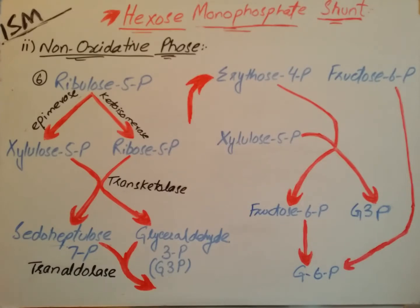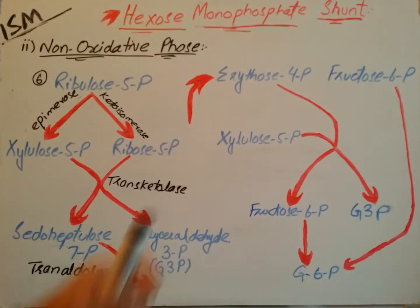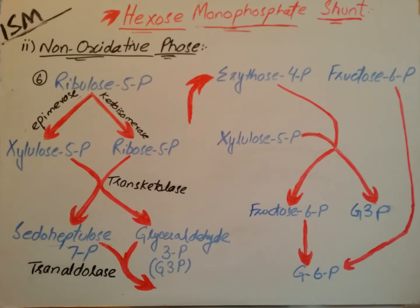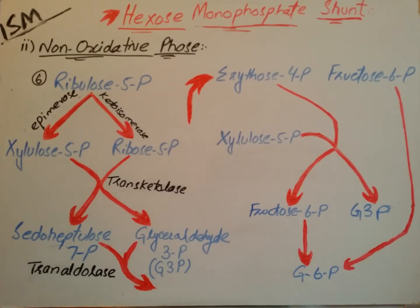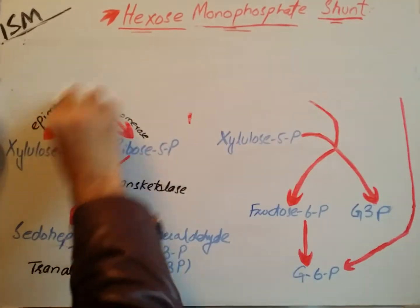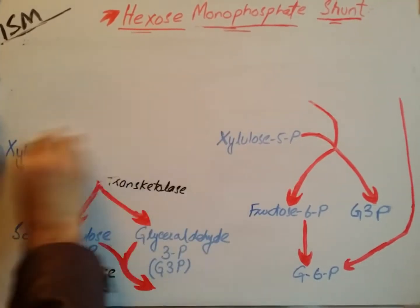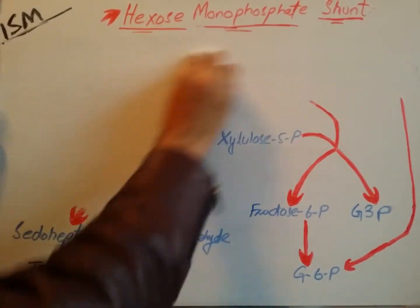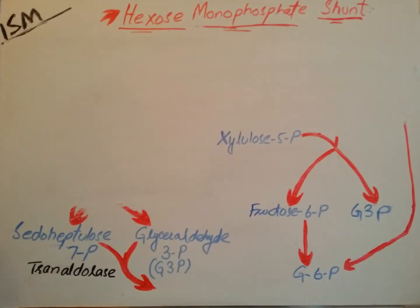Fructose-6-phosphate is then converted into glucose-6-phosphate. The fructose-6-phosphate formed in the reaction of sedoheptulose-7-phosphate and glyceraldehyde-3-phosphate is also converted into glucose-6-phosphate. So, the end products of both the oxidative and non-oxidative phases of the hexose monophosphate shunt are glucose-6-phosphate and NADPH.